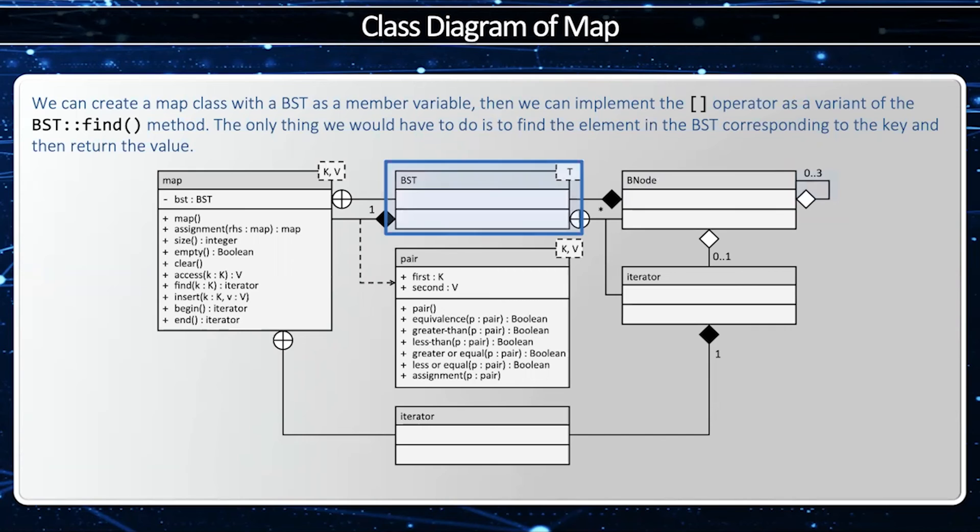The binary search tree is going to have a collection of binary nodes. Notice this is composition, which means that the binary search tree will create and destroy all instances of the binary nodes. The binary node is a nested class within a binary search tree, which makes sense because the B node only makes sense in the context of the BST.